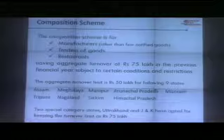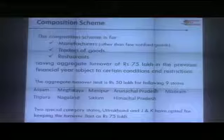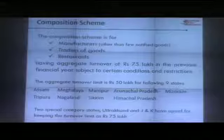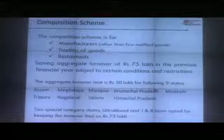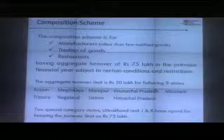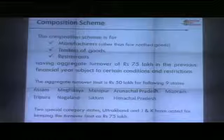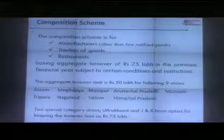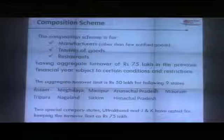Composition scheme can be availed by a manufacturer — excluding a small category I will shortly explain — by a trader, and within services, only a restaurant can avail of it. The turnover limit in the last financial year is 75 lakhs, meaning if your turnover in the last financial year was 75 lakhs or less, you are eligible. For 9 of the 11 special category states, the threshold is 50 lakhs.